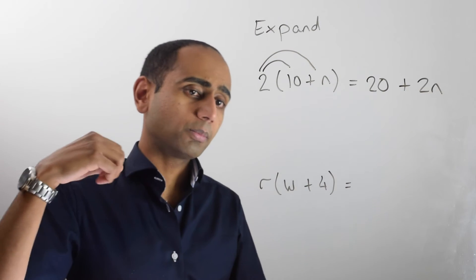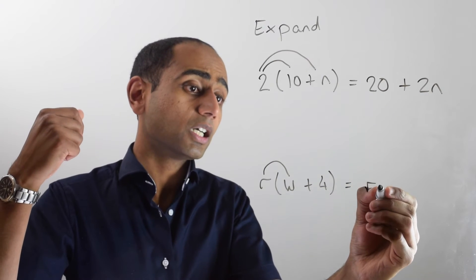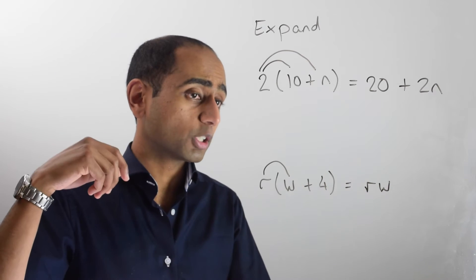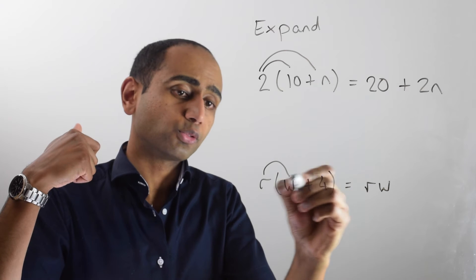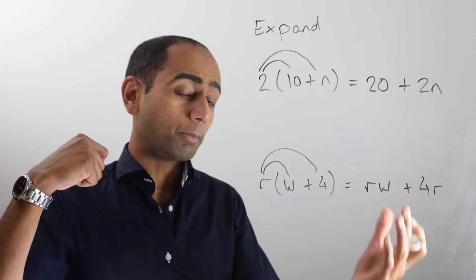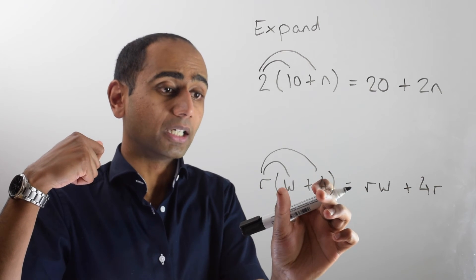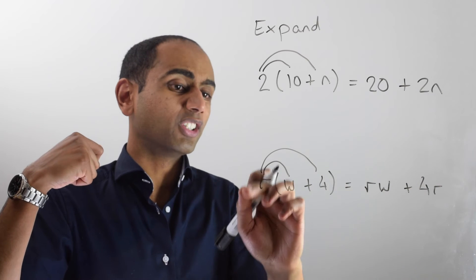In this next example I've got r lots of w. And remember r times w is simply rw. You can leave out the multiplication sign in algebra. And then r times 4 is going to give me 4r. Remember when we're multiplying a letter by a number, you want to put the number in front. So it's 4r rather than r4.